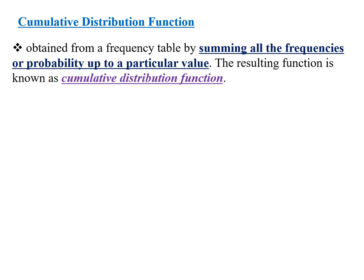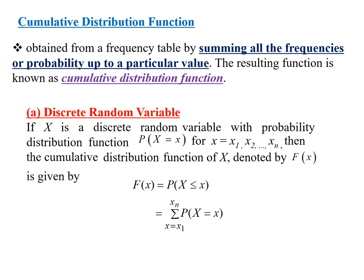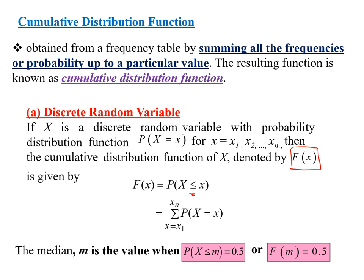For the cumulative distribution function (CDF), it is obtained from a frequency table by summing all the frequencies or probabilities up to a particular value. The CDF of discrete random variable x, denoted by capital F(x), is given by F(x) = P(X ≤ x), the summation of probabilities from x = x1 up to xn. The median is the value when P(X ≤ x) = 0.5, or F(m) = 0.5.